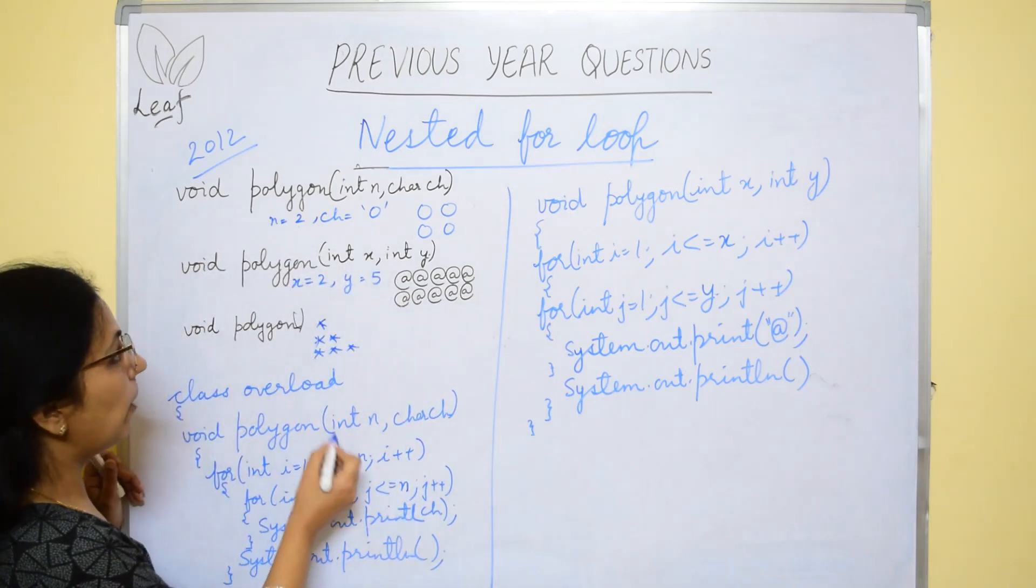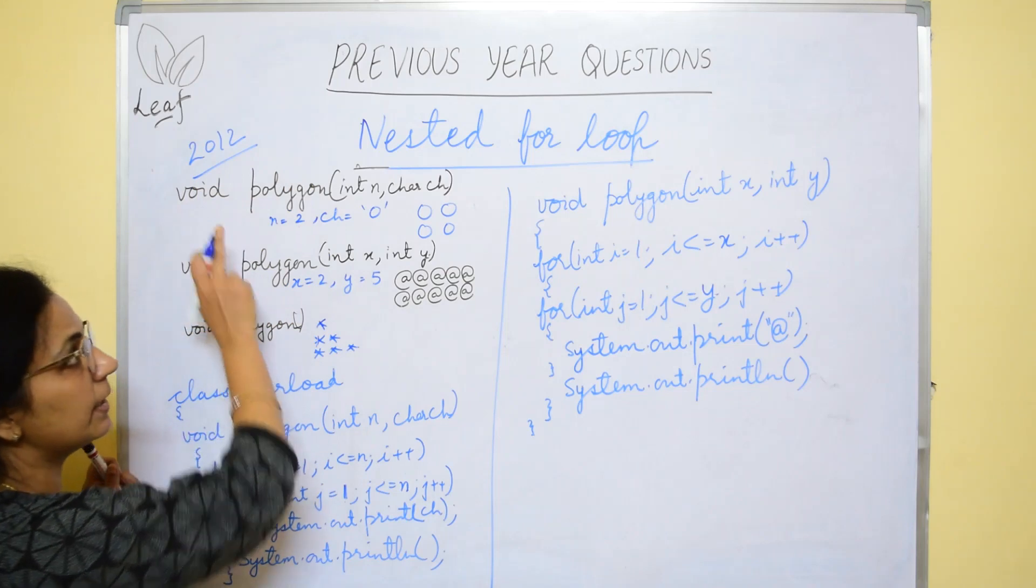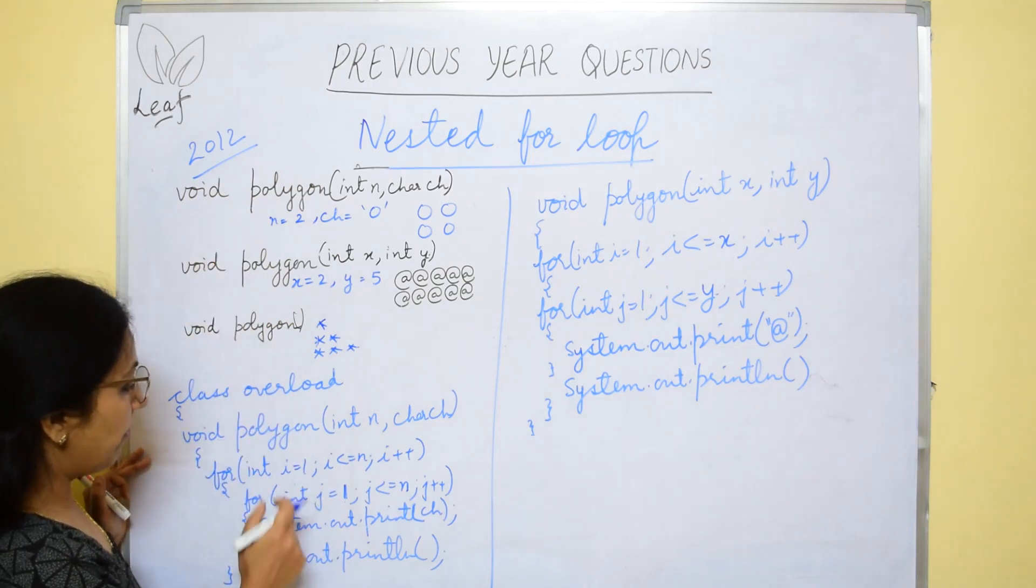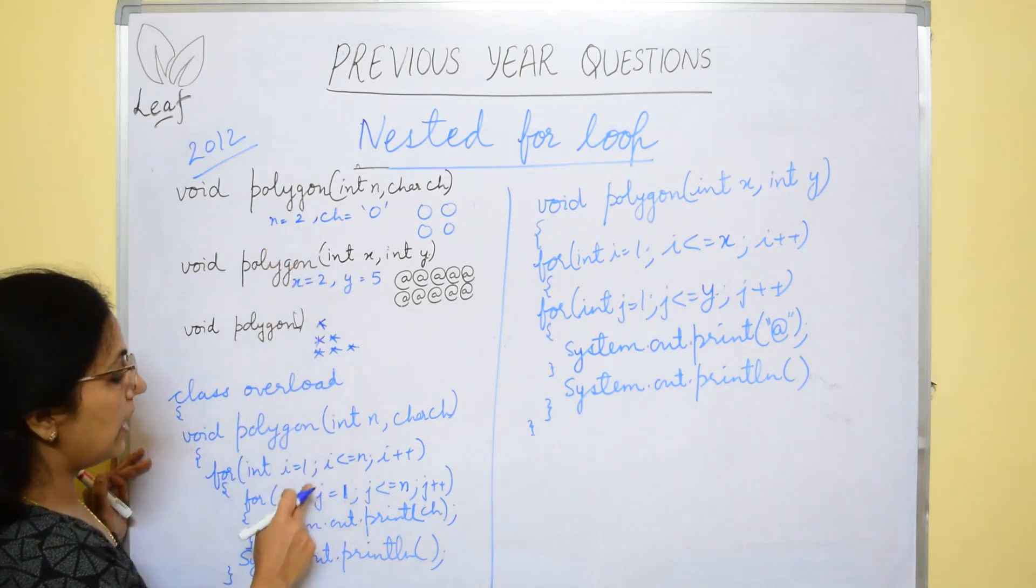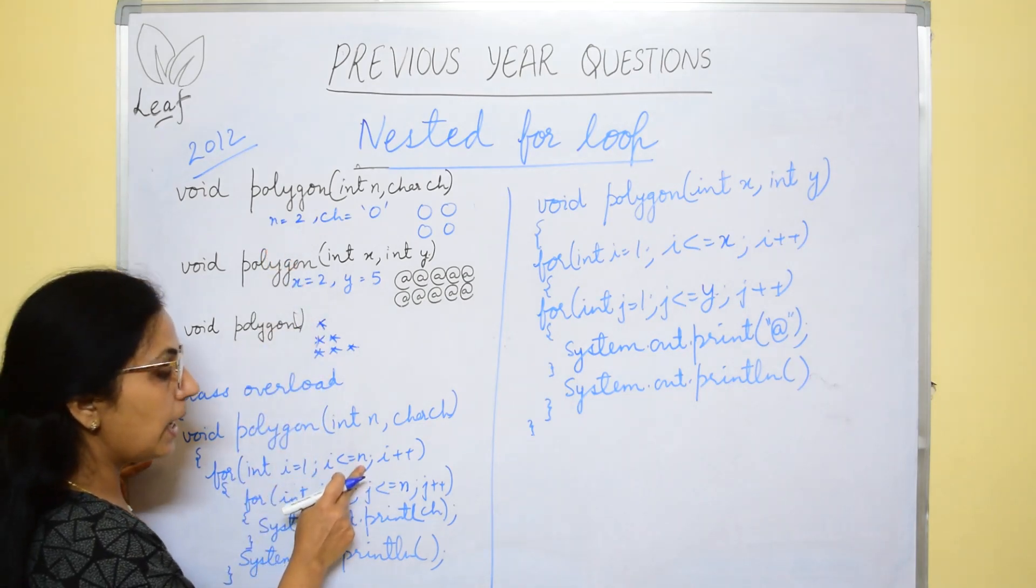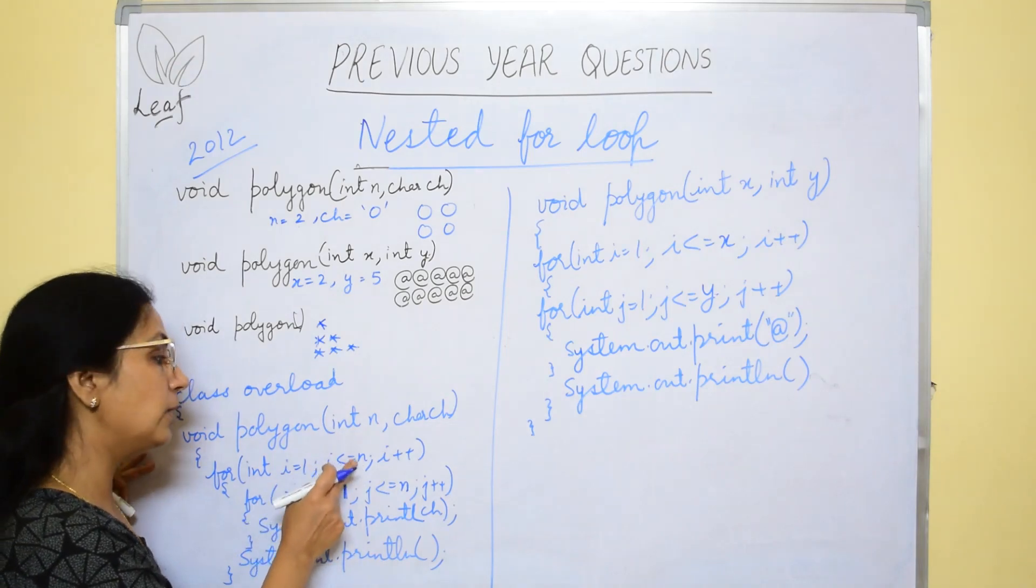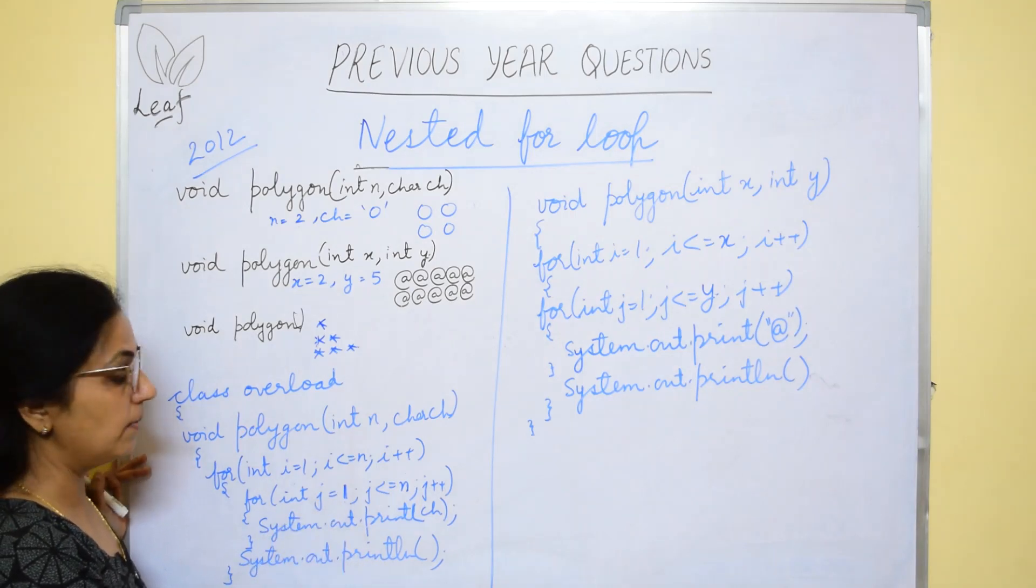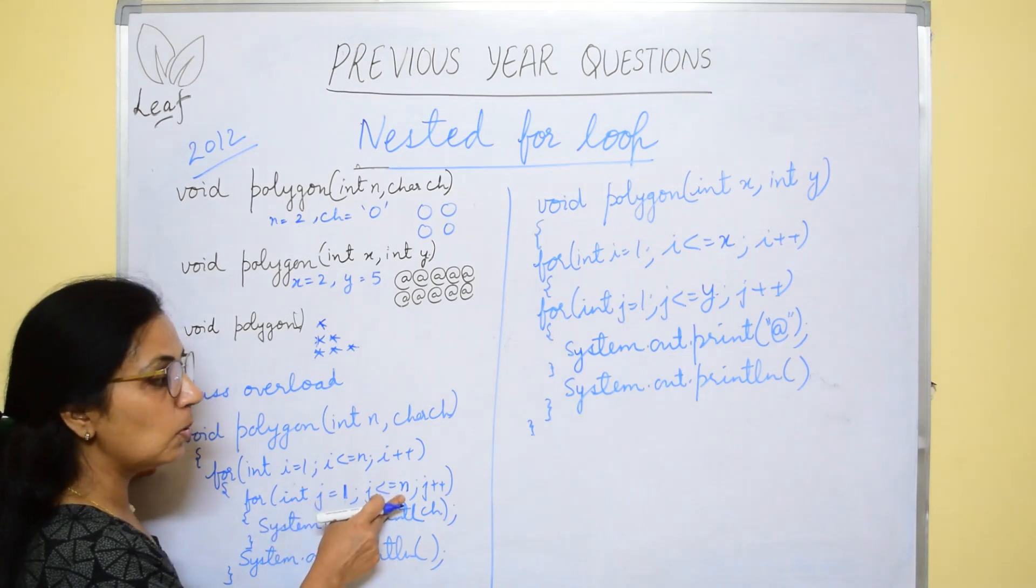Let's see this function first. Void polygon, polygon int n char ch. This is already function header is given in the question. Let's take the programming statements nested for this. How many rows? N rows, 1 to n. Rows are n. So, the outer loop will go from 1 to n. How many columns? Since it is square, so n number of columns also. So, the inner loop will also grow from 1 to n.